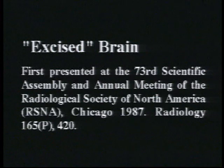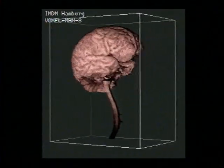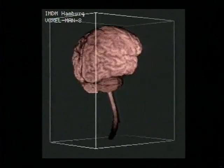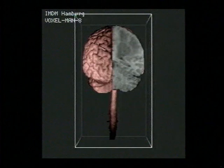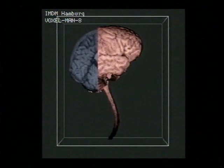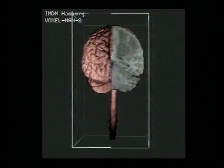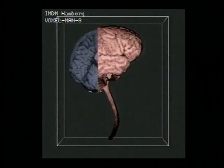The next scene, generated in 1987, shows the first brain ever reconstructed from a living person. It was a patient with a brain tumor whose brain could be inspected by rotation and cutting. The quality of the brain surface was poor as compared to today's techniques.